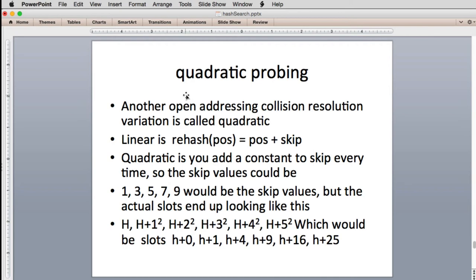So another technique is called quadratic probing. In quadratic probing, instead of being a constant skip every time, you add a value to the skip every time you use it. So you skip a little more each time you go to the right by a constant amount. It turns out if you work out the math, you get a formula like this. You get the original hash, and then if that fails, you go to the original hash plus one, which is one squared. And if that fails, you go to the original hash plus two squared, then you go to the original hash plus three squared, and so on. So you actually end up with slots that look like this, where these are all perfect squares of the integers. So that's called quadratic probing.